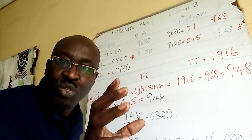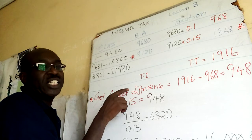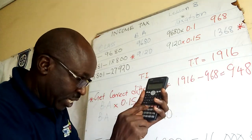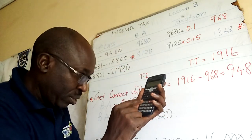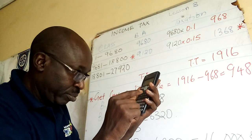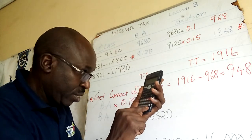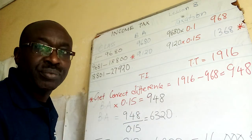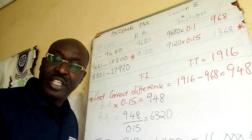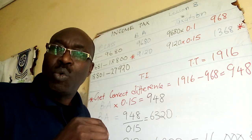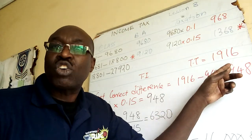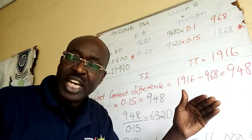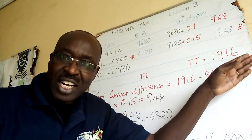Once it exceeds, you get the correct difference. The total given is 1,916 minus the taxation of Class 1 which is 968. The difference is 948. Each time you must ensure you do not exceed the total tax given. The first class is always okay; put it, then go to Class 2.